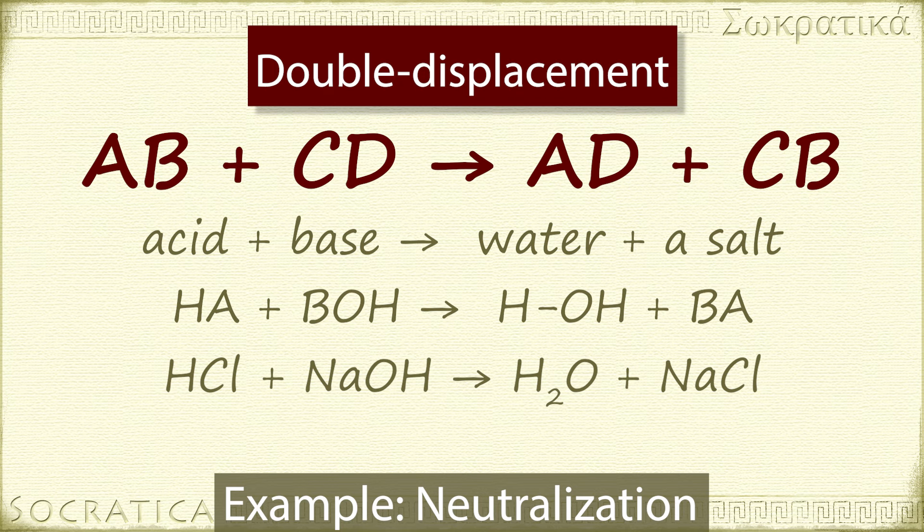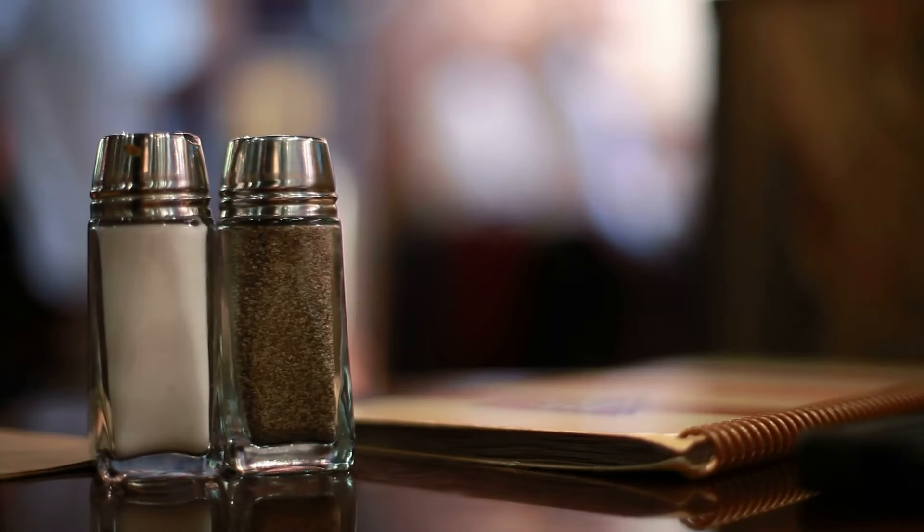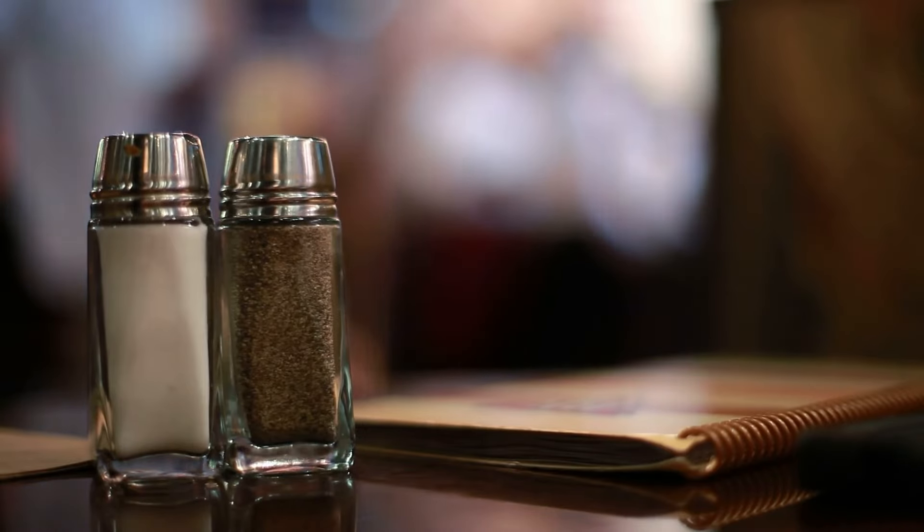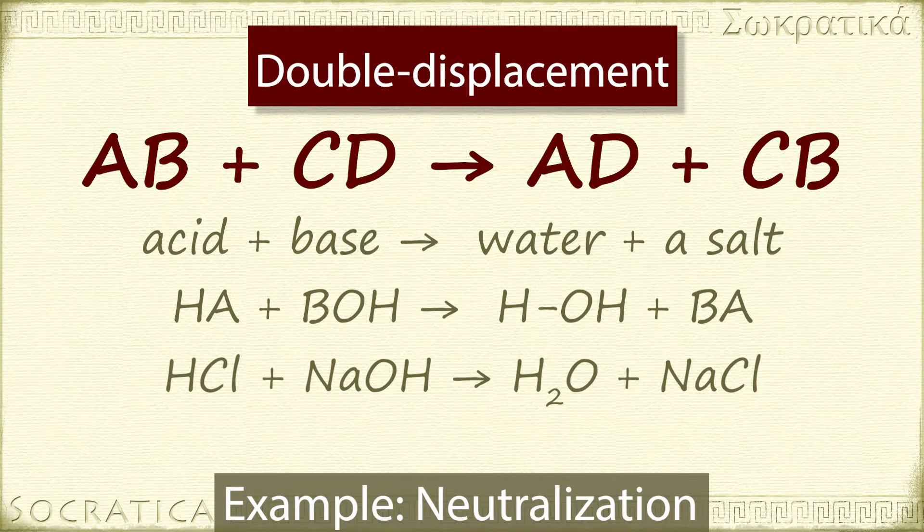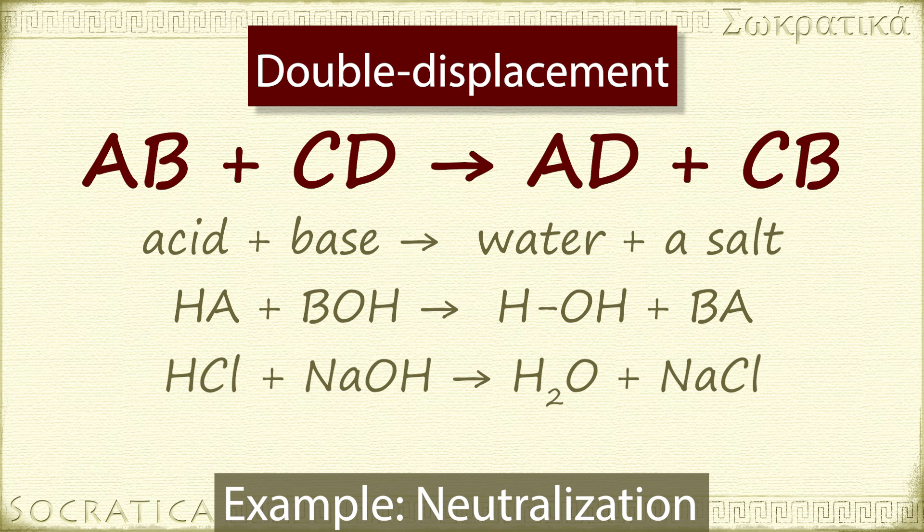In regular life outside the lab, we call NaCl salt, or sometimes table salt. But it's not the only salt in the world of chemistry. As an exercise, try writing out the reaction between a different acid and base, like the acid hydrogen bromide reacting with the base potassium hydroxide. What's the salt formed by this reaction?